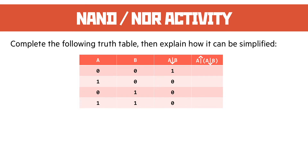NAND means not AND — it's going to be the opposite of an AND. The only time it's going to give us a zero is if A and A NOR B are both giving us one, and that doesn't exist. So it's all a bunch of ones as our result. How can it be simplified then? Look at the final column — it's all ones. We can simplify this expression down to just a one.